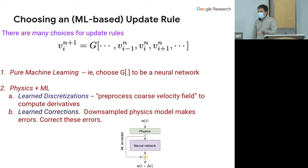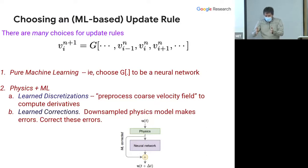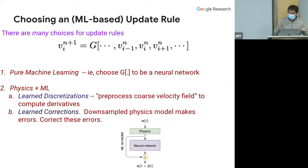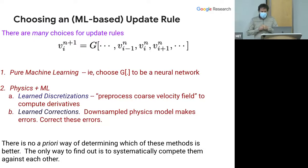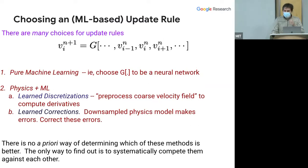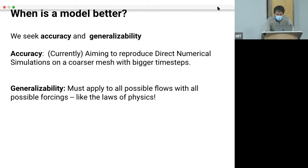Both learned discretizations and learned corrections represent 'as little machine learning as possible,' while pure machine learning is at the other extreme. Importantly, the mathematics of this field does not yet exist—there is no a priori way of determining which approach is better. The only way I know is to actually run everything, which is one reason that doing this at Google, with a lot of compute, turned out to be particularly convenient.